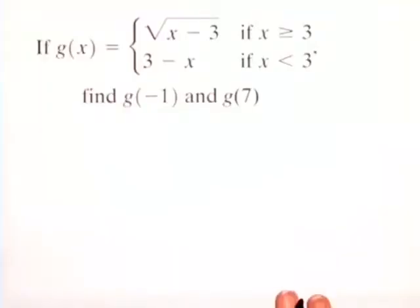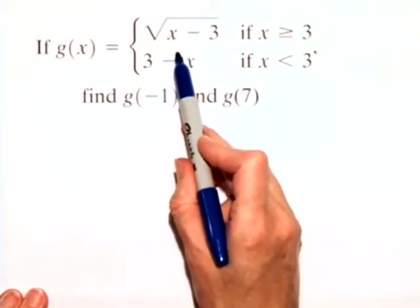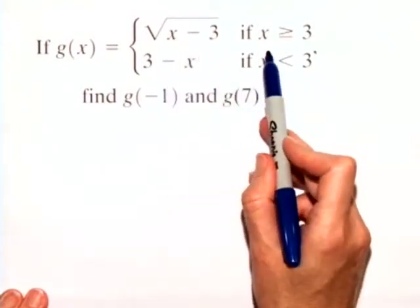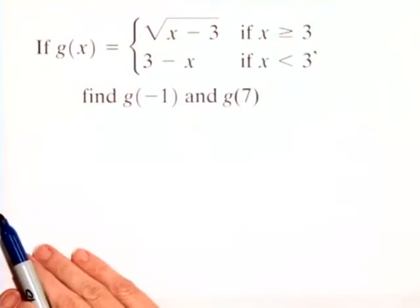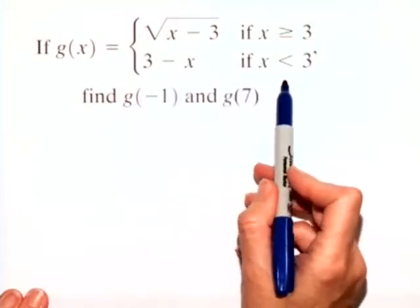For this example, we're given a piecewise defined function, and we're asked to calculate two different values. So we have g of x, and it's defined as the square root of x minus 3 any time x is greater than or equal to 3, and it's defined as 3 minus x if x is less than 3.